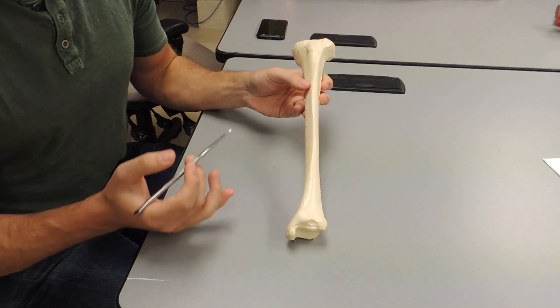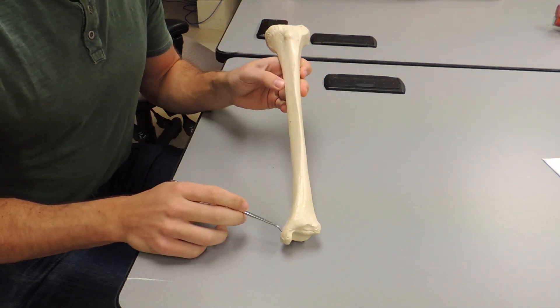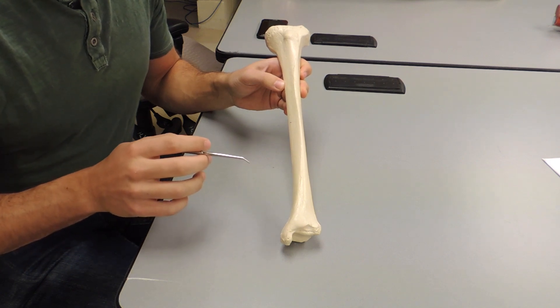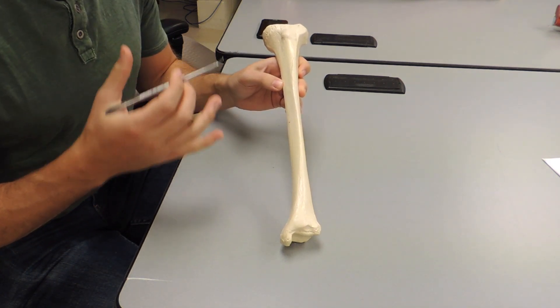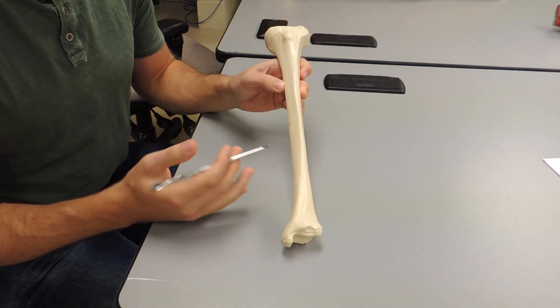In order to tell left from right on the tibia, you want to look for the medial malleolus, and that needs to be on the inside of your leg or the medial side of your leg.